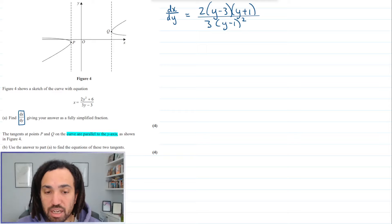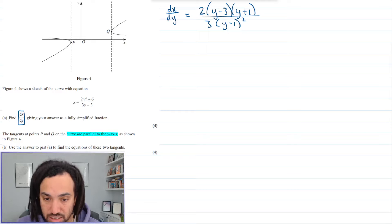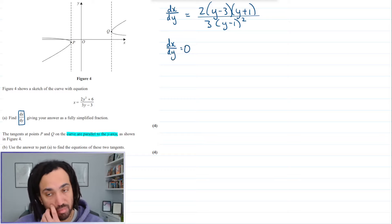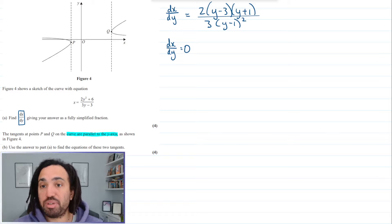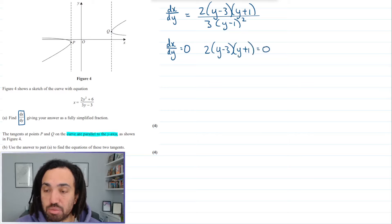So when a curve is parallel to the y axis, it means that when the dx by dy is equal to zero. So in this case, we do have dx by dy. So it's the 2y minus 3, y plus 1 that needs to equal to zero.